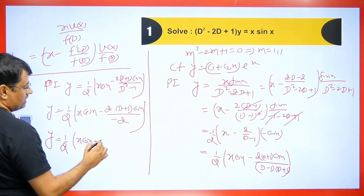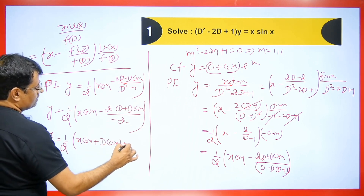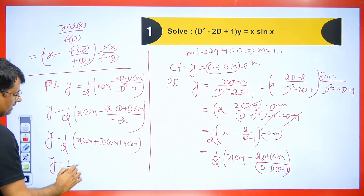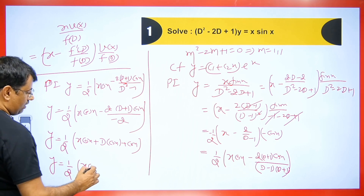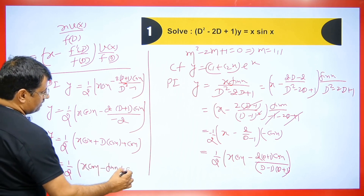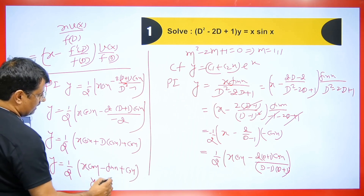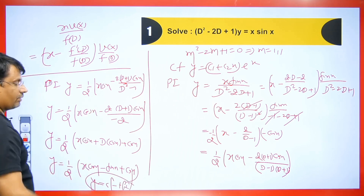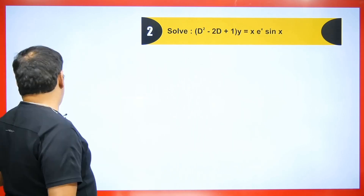Multiplying cos(x) with the inner terms gives D·cos(x) plus cos(x). The differentiation of cos(x) is −sin(x). Now it will be x·cos(x) minus sin(x) plus cos(x). We get this value, and the final answer is CF + PI. In this way, these types of questions can be solved.